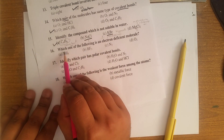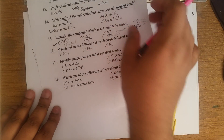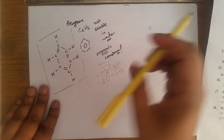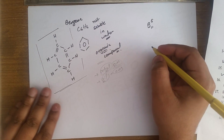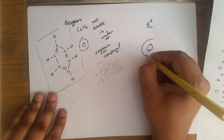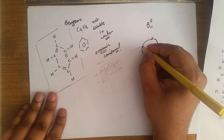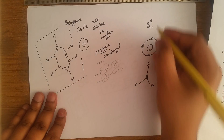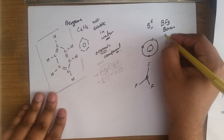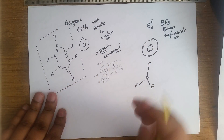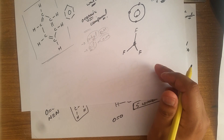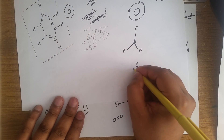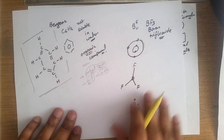MCQ 16: which one of the following is an electron deficient molecule? This is one of my favorite MCQs. Boron is the 5th element of the periodic table, with mass 11 and 5 electrons — 2 in the first shell and 3 in the outer shell. It forms a triangular-type molecule with 3 fluorine atoms, giving BF₃ (boron trifluoride).